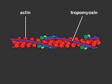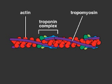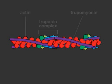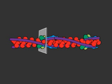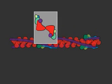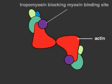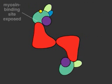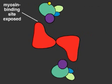A calcium-sensitive complex, called troponin, is attached to the end of each tropomyosin molecule. When calcium floods the cell, troponin binds to it, moving tropomyosin off the myosin binding sites.